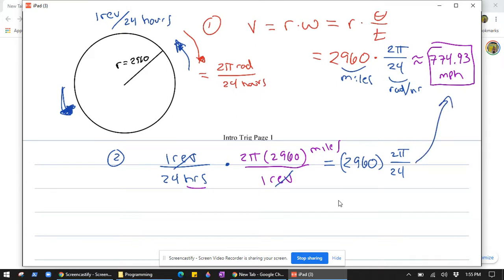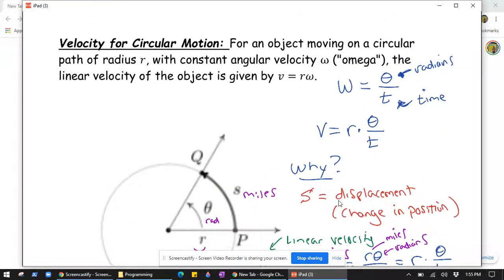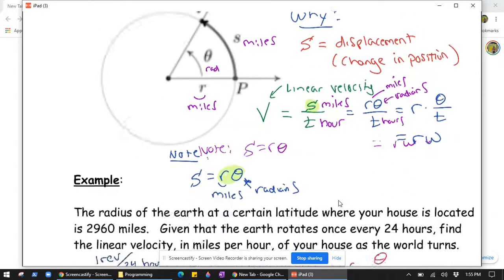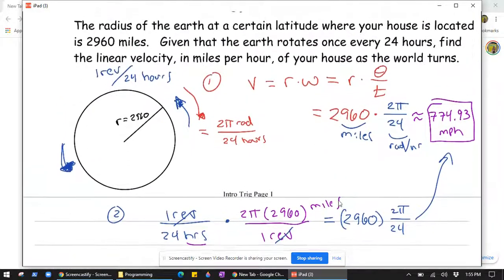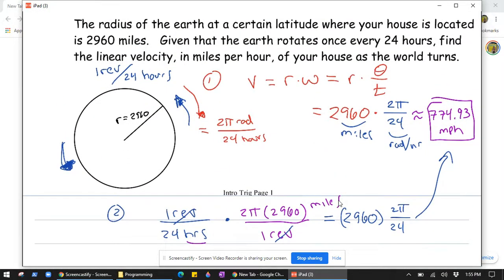So that is a rundown of velocity for circular motion that relates angular and linear velocity. You've got a formula you can use, but of course you can just go back to basic principles and do dimensional analysis if you prefer.